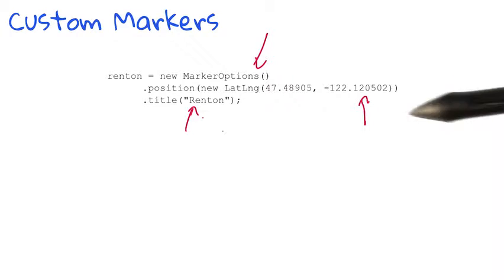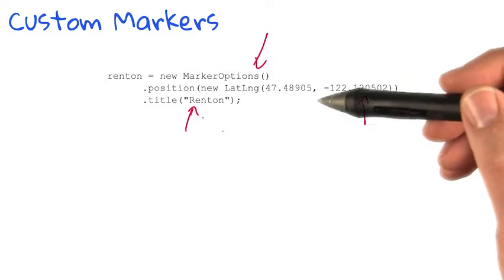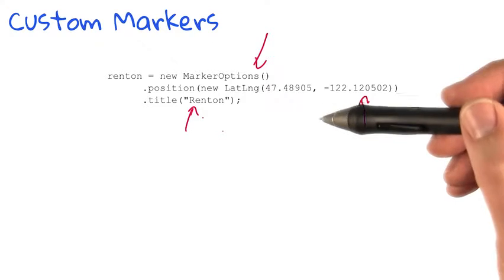Now this code set the position and title for the pin. But we can customize this further with another property, which is the icon property.